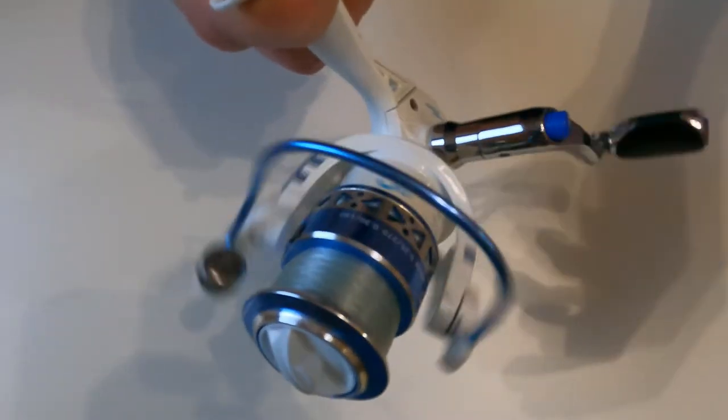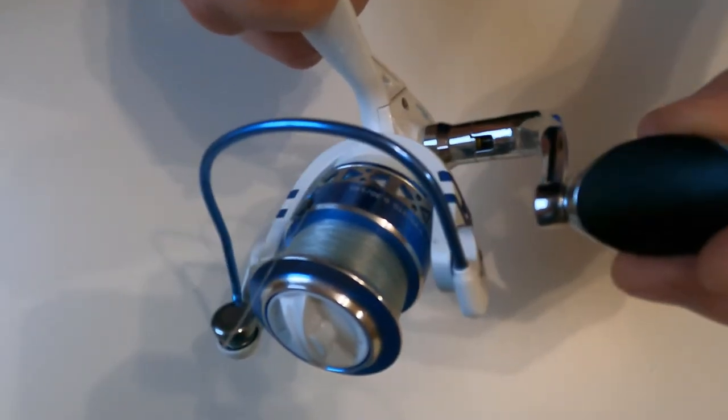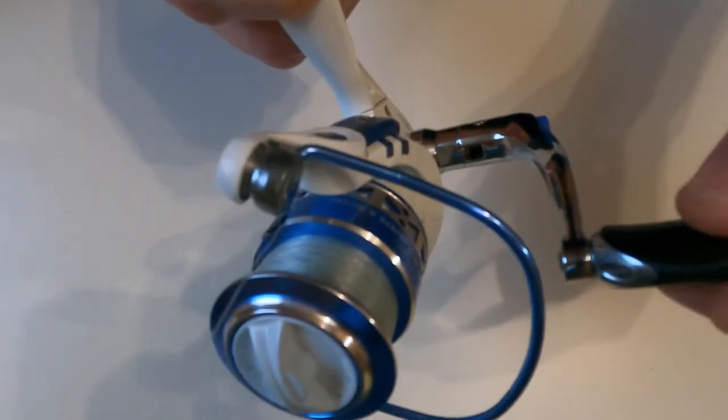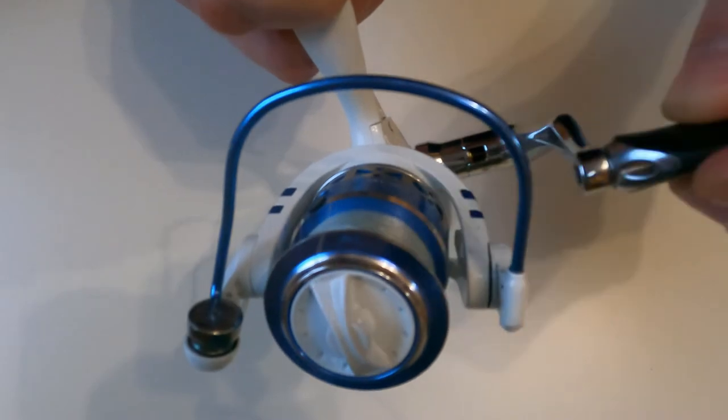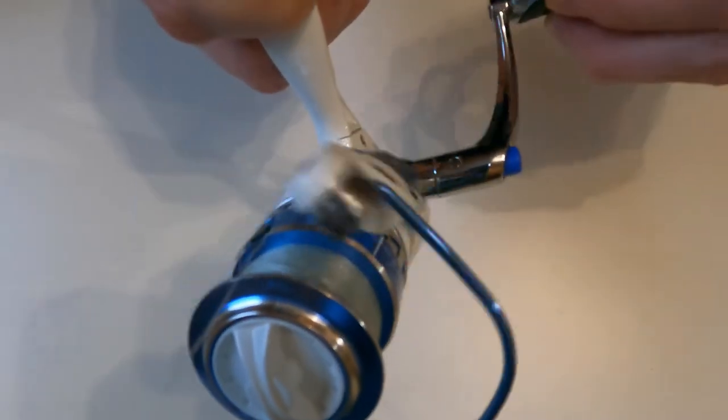It has a 5.2 to 1 gear ratio, and basically what that means is that when you do a full spin of the handle, this part does 5.2 revolutions. One, two, three, four, five pointer.